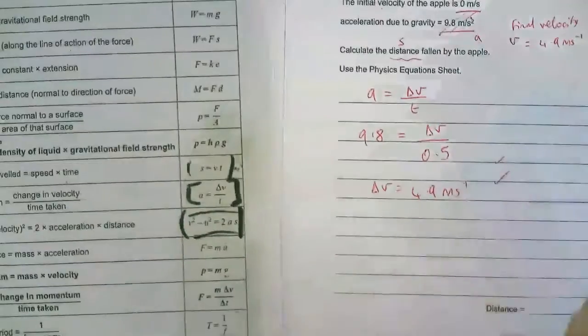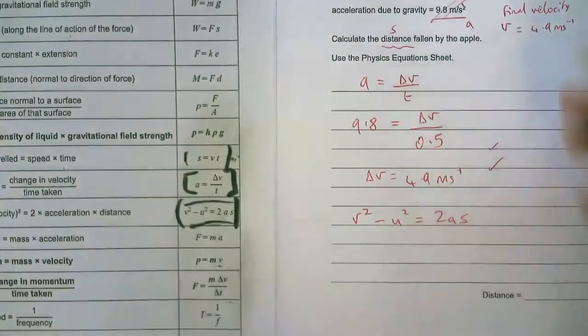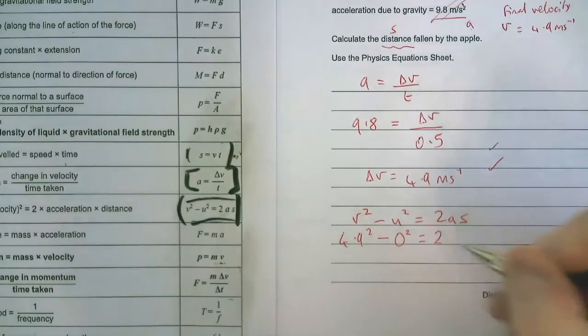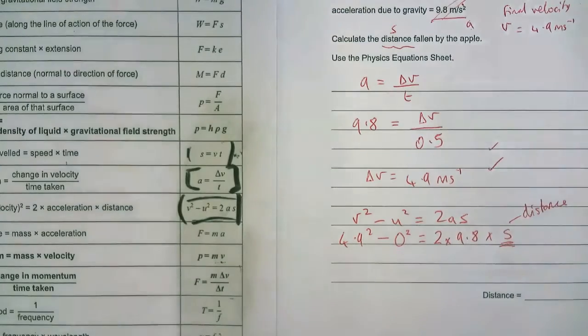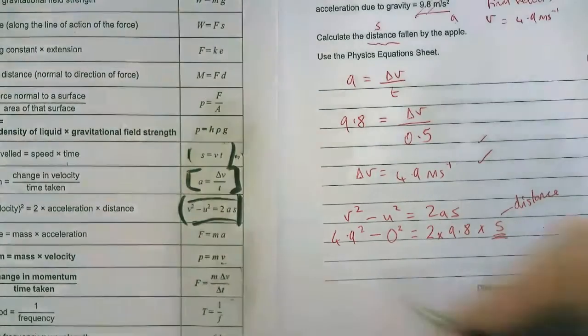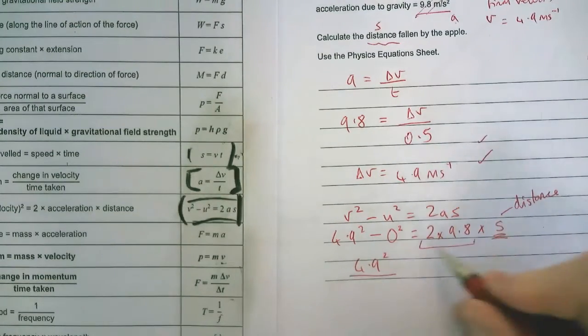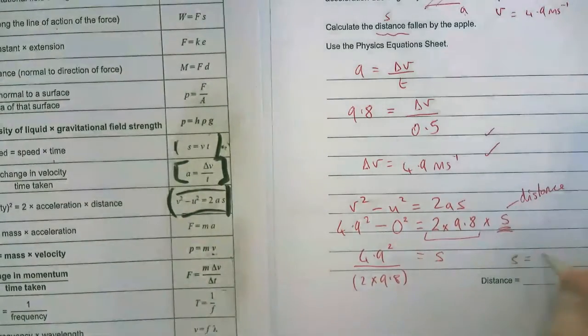Now the thing we are trying to find is s, so everything else is just numbers from the equation. 4.9 squared minus 0 squared equals 2 times the acceleration times by s for distance. Or you could write x there if you wanted to. After that point, we're just trying to get s by itself. So I divide both sides by 2 times 9.8, keep it in brackets. And the distance here happens to be 1.2 meters, which makes sense because we are talking about an apple falling.